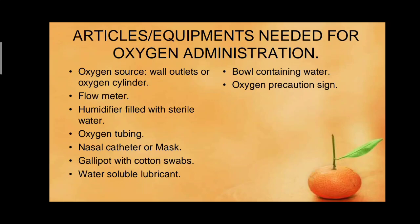Now, the articles and equipment needed for oxygen administration. First, the oxygen source — central oxygen wall outlets or oxygen cylinders. Then: flow meter, humidifier with sterile water, oxygen tubing, nasal catheter or mask, gallipot with cotton swabs, water-soluble lubricants, a bowl containing water, and oxygen precaution signs. We should have all these items, including gloves, assembled before starting oxygen administration.